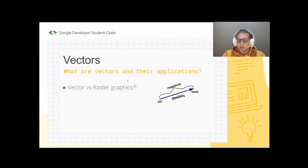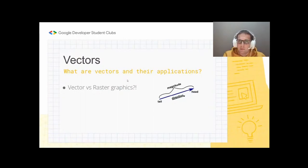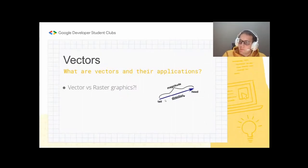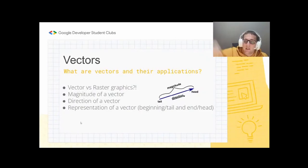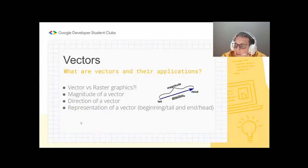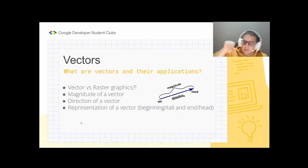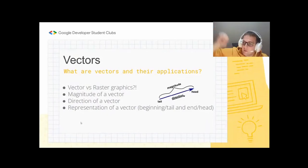Why do we need to study vectors? Sometimes physical quantities are difficult to describe with just one number — a numerical value alone isn't enough. That's where vectors come in. Besides the numerical value — the magnitude — a vector also has a direction, which tells us where that value is directed toward. So a vector has two main properties: magnitude (the length or numerical value) and direction (showing which way it points in a coordinate system).